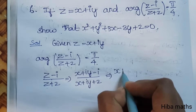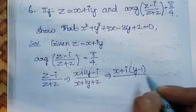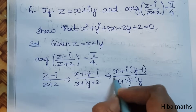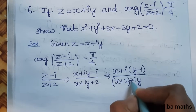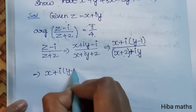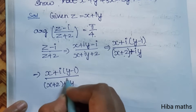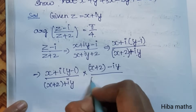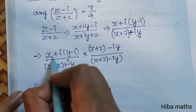Substituting z = x + iy: the numerator becomes x plus i(y minus 1) and the denominator becomes (x plus 2) plus iy. This is the argument of (x + i(y-1)) divided by (x + 2 + iy). To simplify, multiply by the conjugate of the denominator, which is (x + 2) minus iy.